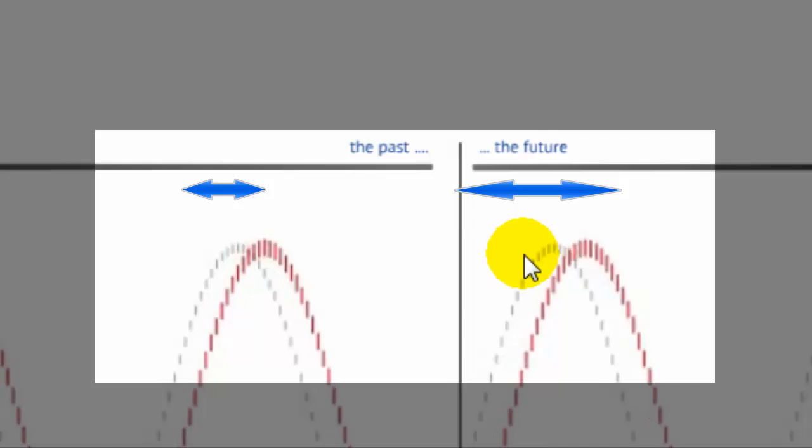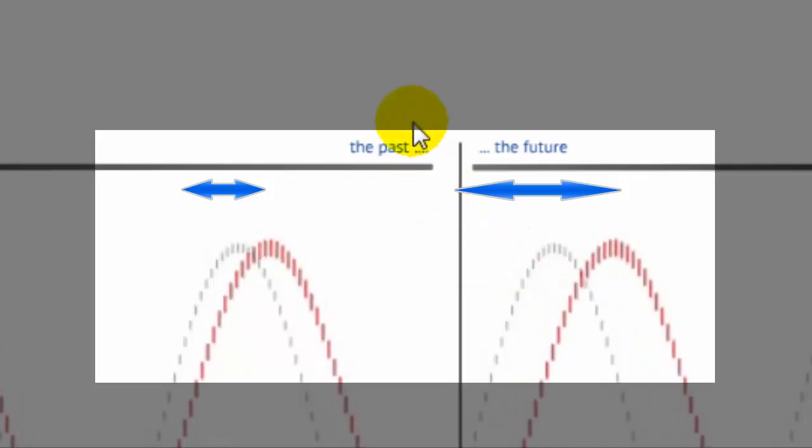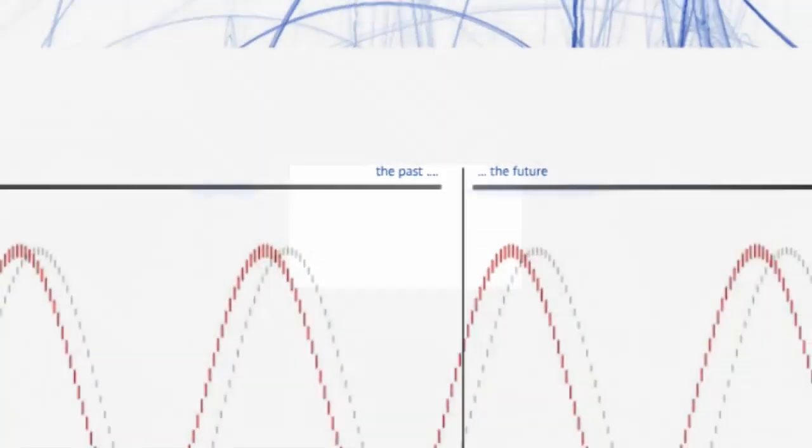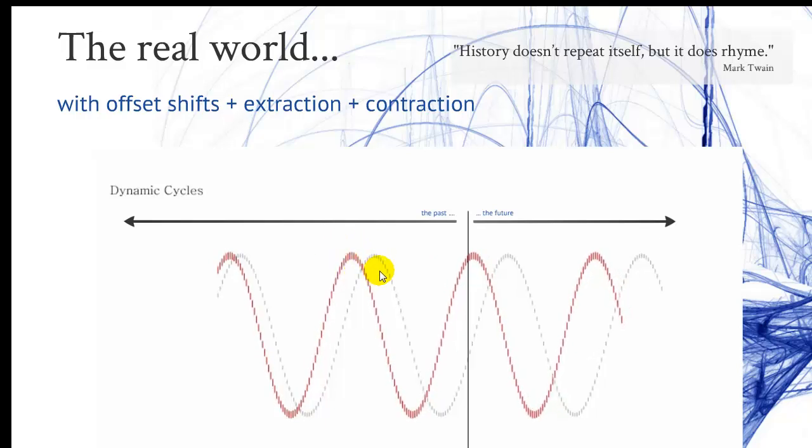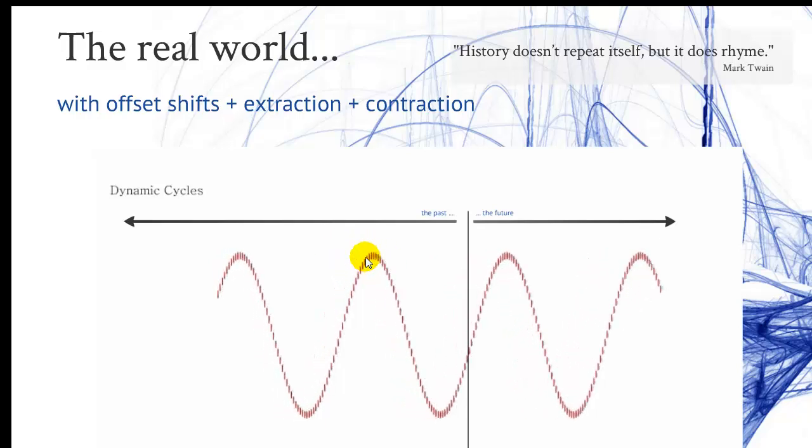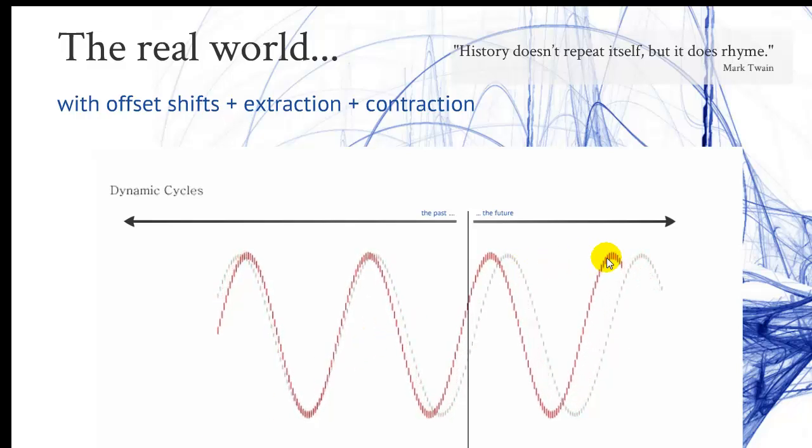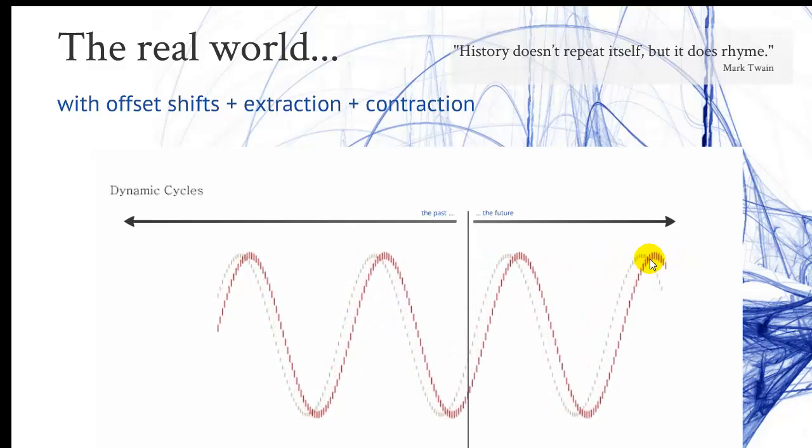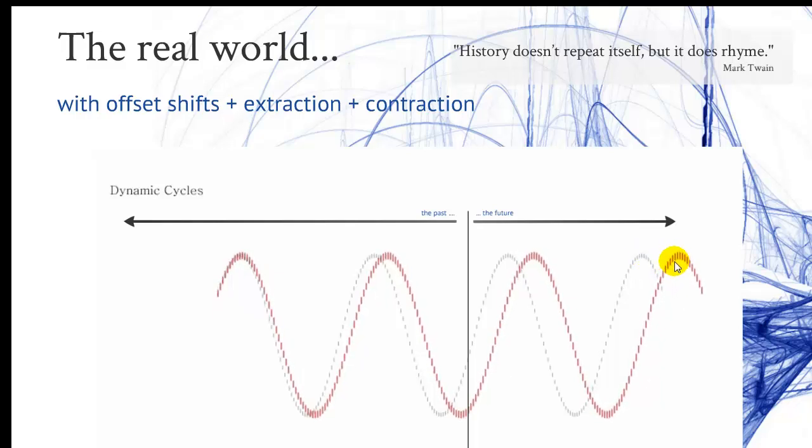Because if you do static forecast, it might look good on the left side of the chart because it's just moving slightly around the static one. But if you then move over to the right side of the chart,